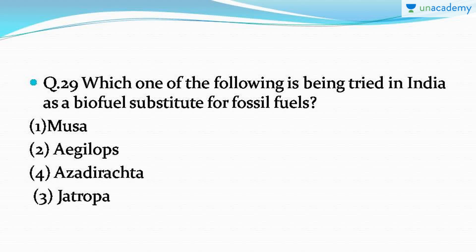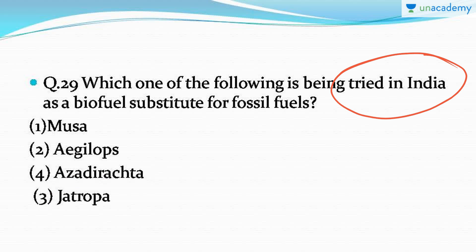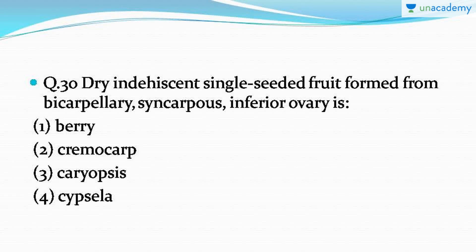The next question asks which one of the following is being tried in India as a biofuel substitute for fossil fuels — you can answer it if your general knowledge is good. The correct answer is option number three: Jatropha. Jatropha is actually a plant or fruit from which biodiesel is extracted, and that's why it was tried in India as a biofuel substitute for fossil fuels.